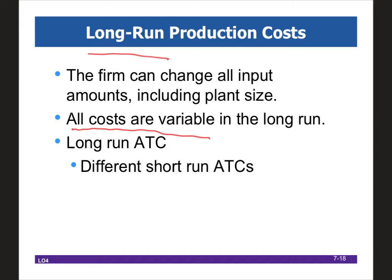What does this mean? It means that the firm can completely control and change everything about their variable and fixed resources. This might mean I want four factories producing cupcakes instead of one, or eight tractors to grow my corn instead of two. Any possible combination of capital, labor, and raw materials is definitely feasible in the long run.